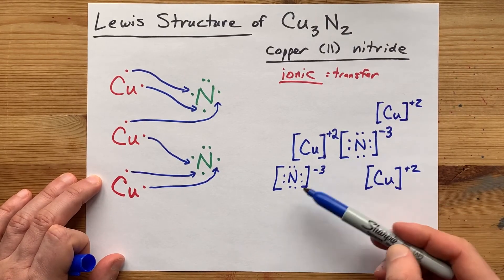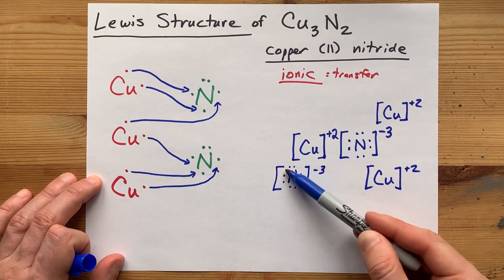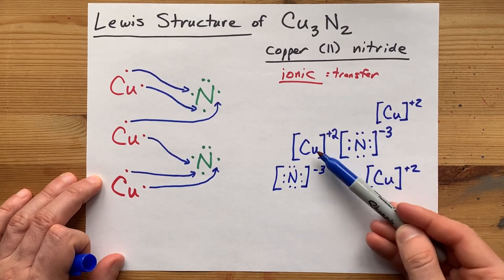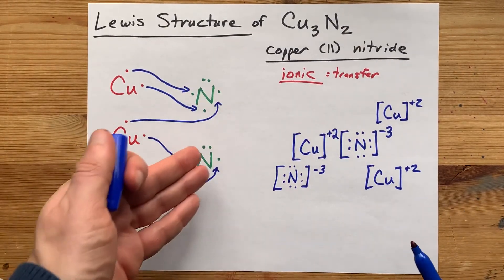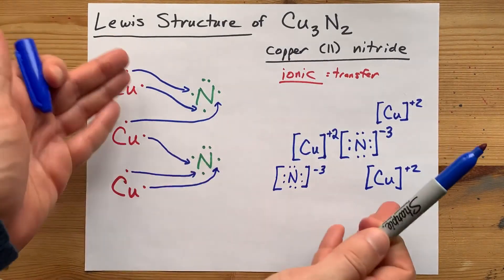But it does contain my two nitrides, nitrogens with minus three charges, and three copper ions. Here's your completed Lewis structure, here's how it happens, and here's the end of the video.